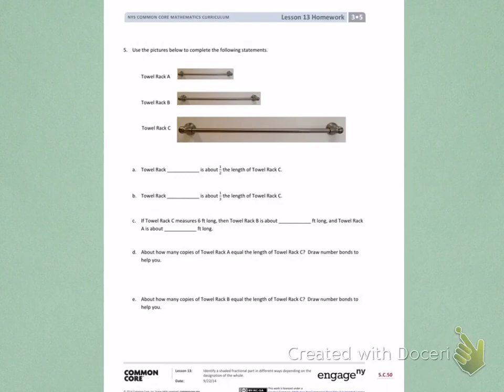Towel rack blank is about one half of the length of towel rack C. So I want to look carefully at the length of towel rack C and decide if towel rack A or B is about one half of that. When I look at the pictures carefully, I can see that towel rack B is about one half the length of towel rack C. Letter B.